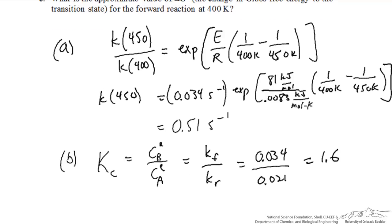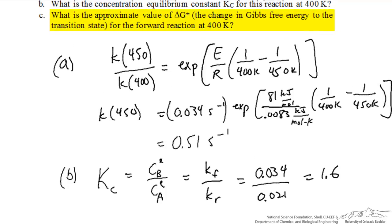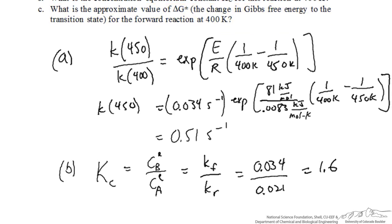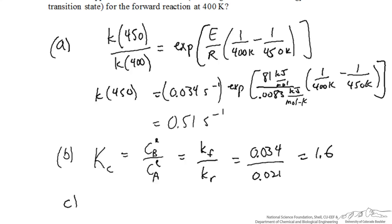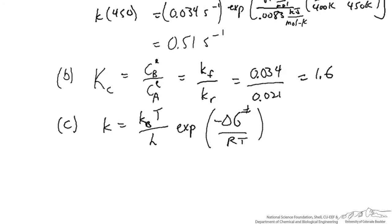Part C asks us to determine delta G to the transition state based on a transition state theory interpretation of the rate constant. Here we'll use the Eyring equation. For this first order reaction, the Eyring equation says that the rate constant is equal to the following, where delta G to the transition state is given inside here.